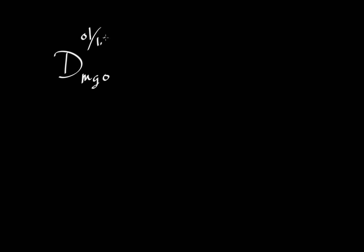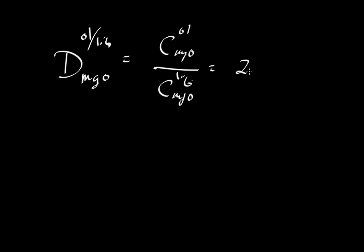When looking at distribution or partition coefficients, we usually talk about trace elements, but they don't have to be — they can be oxides. If we take the concentration of MgO in olivine and divide it by the concentration of MgO in a silicate liquid (a magma), and do some experiments or look at natural cases, we might end up with a value of something like 2.8. This number can be pushed around: increasing or decreasing temperature will change it, and pressure will also have a real, though smaller, effect.